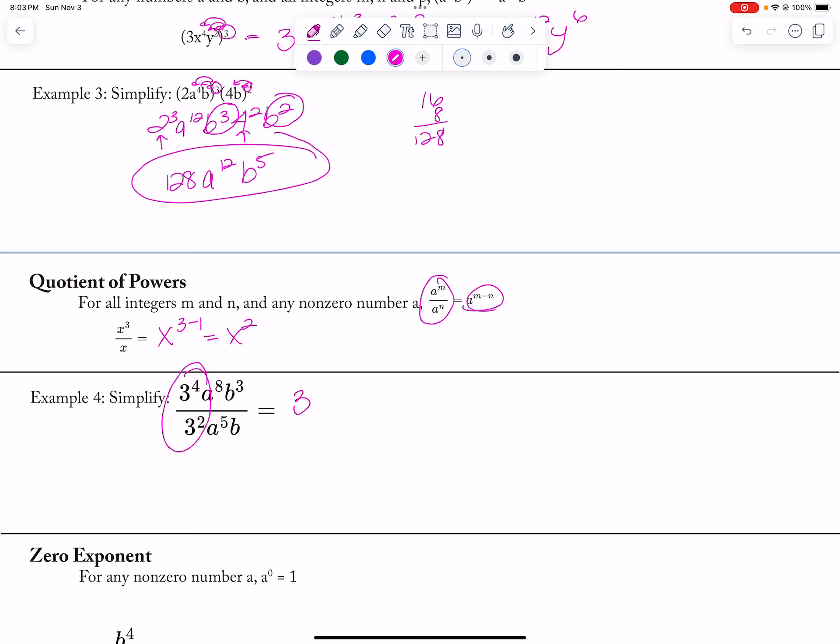Here, I would subtract the exponents, so 3 to the 4th minus 2. I'm going to bring this 5th to the top so I don't end up with negative exponents, so a to the 8 minus 5, and then b to the 3 minus 1, so this would be 3 squared. Actually, a to the 3rd b to the 2nd, which is 9a cubed b squared.